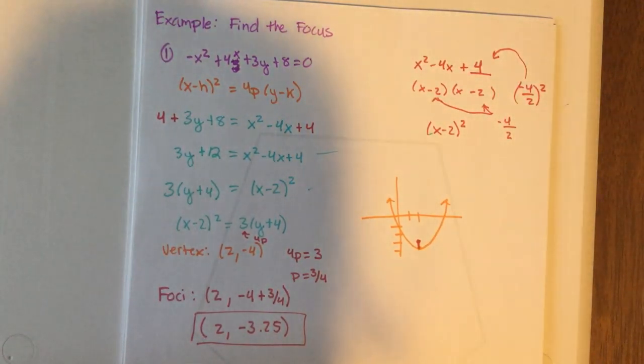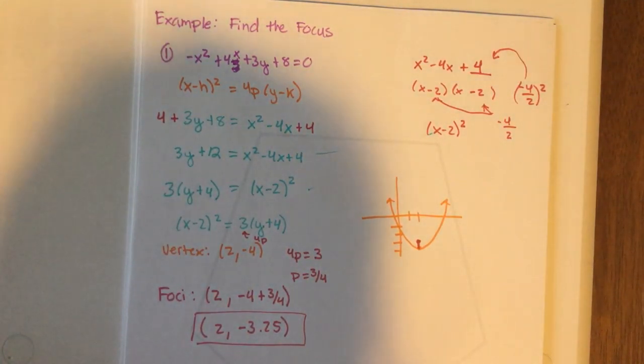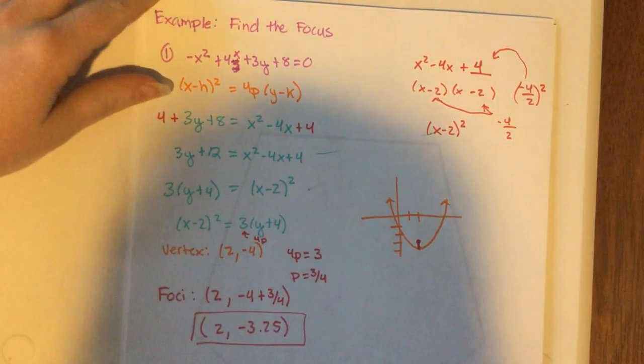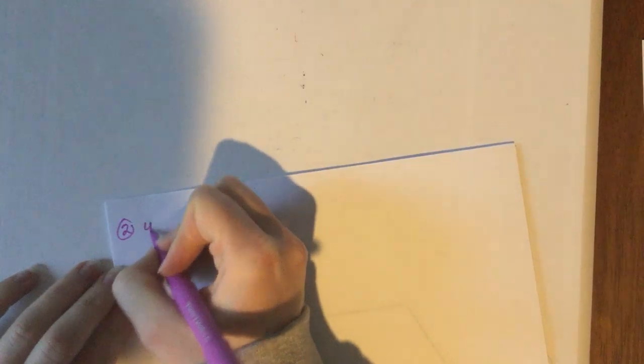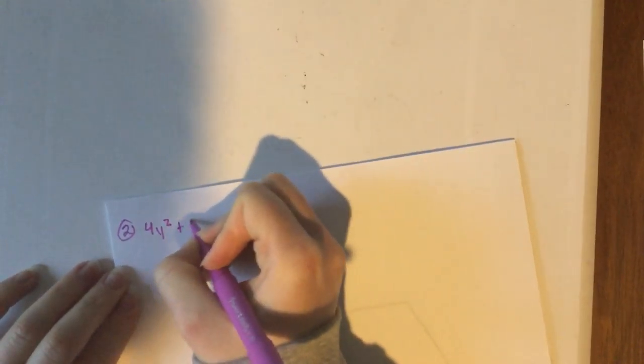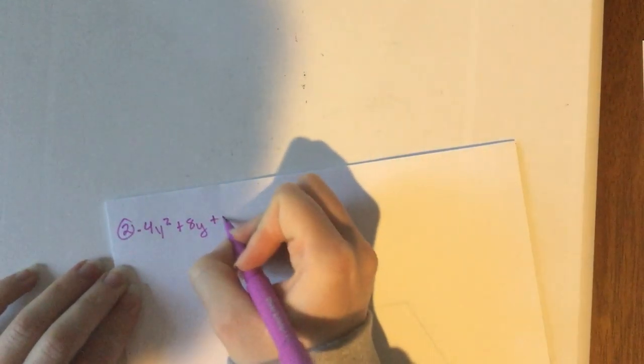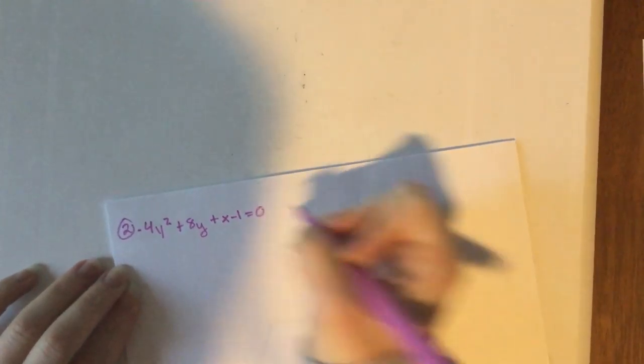So that is the one example. What I want to do is I want to give you a second one to try on your own for a little bit. Same process and everything, but guess what? Instead of an x squared, it's going to be a y squared.